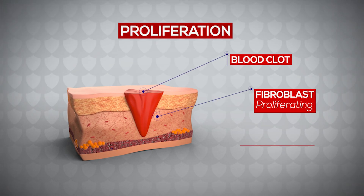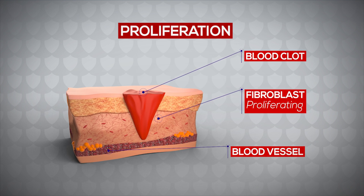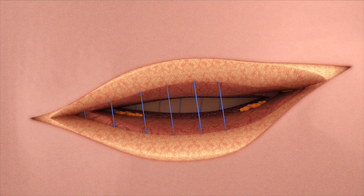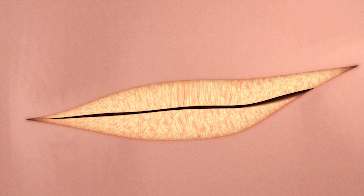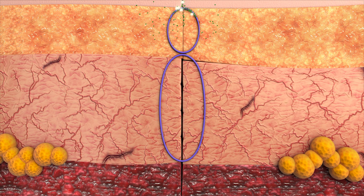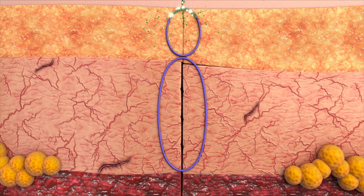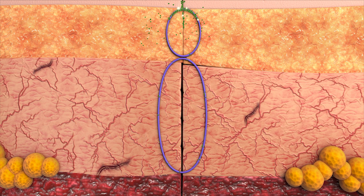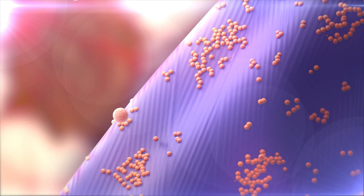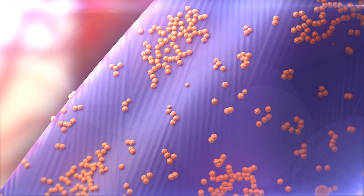Surgical Site Infection occurs when pathogens proliferate in surgical wounds, resulting in an impedance to wound healing. When a suture is implanted, a coating of protein is formed around the suture, which becomes a site for bacterial colonization. This further leads to biofilm formation on the suture surface, allowing the bacteria to resist the phagocytic activity of the leukocytes.